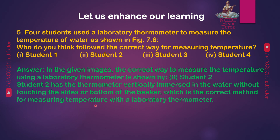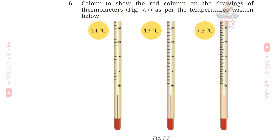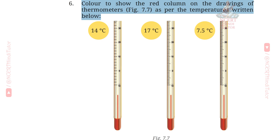Question 6: Color to show the red column on the drawing of thermometers in Figure 7.7 as per the temperatures written below.